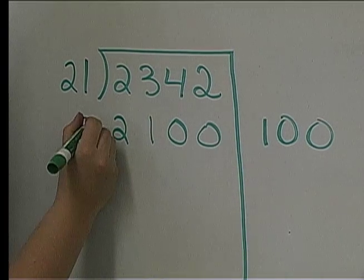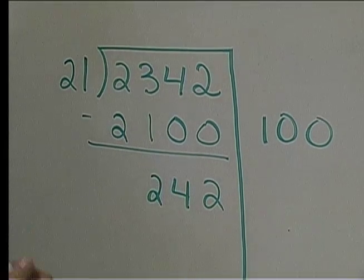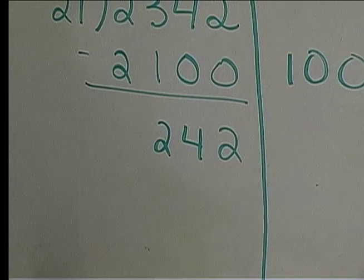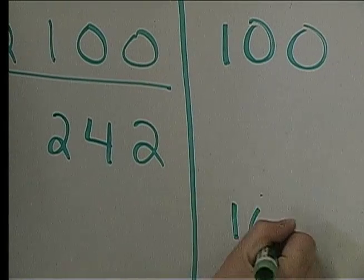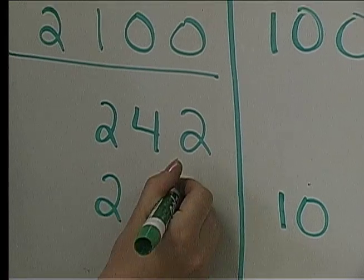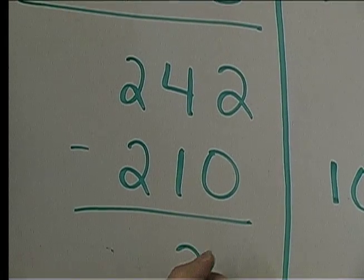And then they'll subtract. Let's say I'm left with 242. And then they might say well I know that 10 twenty-ones is 210. And then they'll subtract again and they're left with 32.